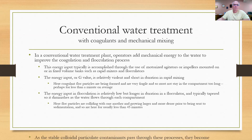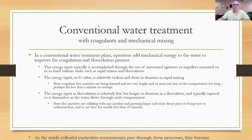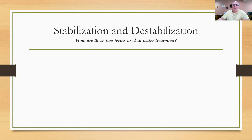It also helps in the last compartment to have enough gentle agitation so that the particles, which are now becoming heavier and denser, don't settle to the bottom prematurely before they get to the sedimentation basin. Typically we're going to be in the flocculator less than 45 minutes or so. As stable colloidal particulate contaminants pass through these processes, they become destabilized and conditioned properly for settling and filtration. So we need to understand the concepts of stabilization and destabilization — how engineers use these terms in water treatment.